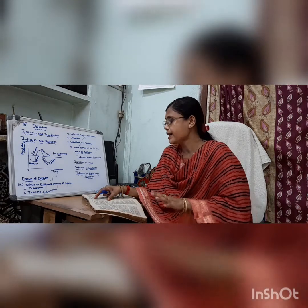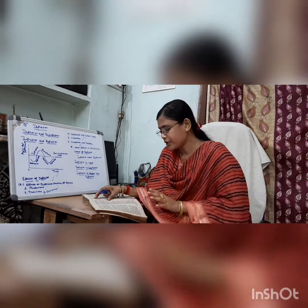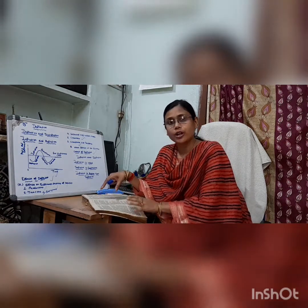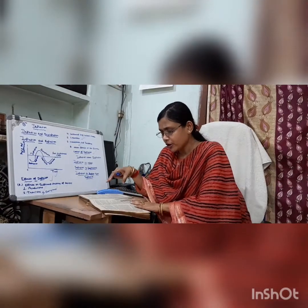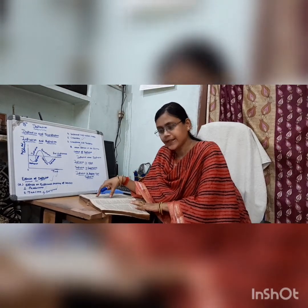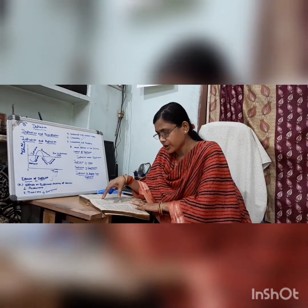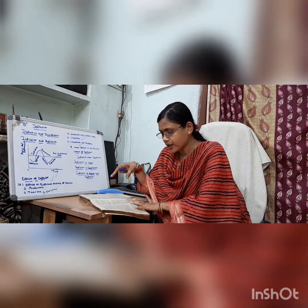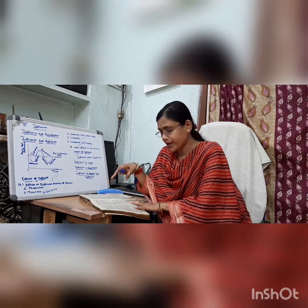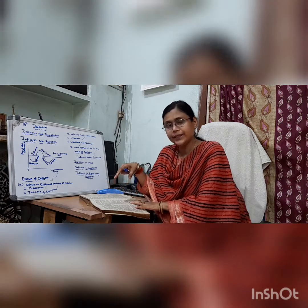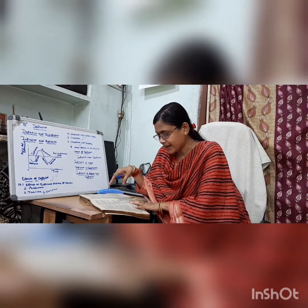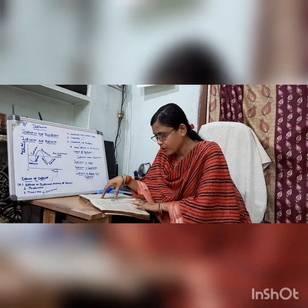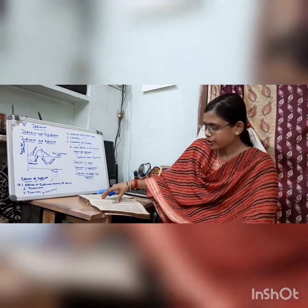Effects on different sections of society. First, deflation affects the producers. During deflation, production costs don't fall as rapidly as the prices of finished goods. When the producer buys raw material and other inputs, he pays a higher price. But by the time he goes to sell his finished products, the prices of raw materials will have fallen because of deflation.